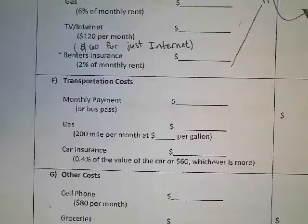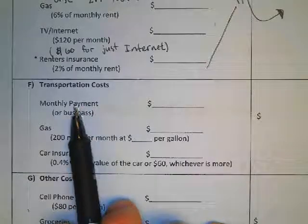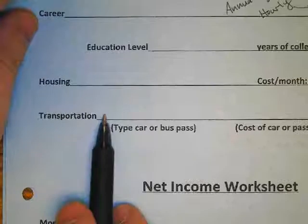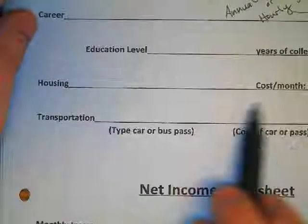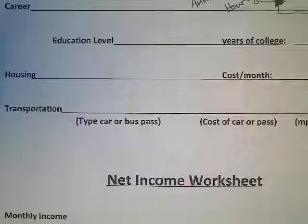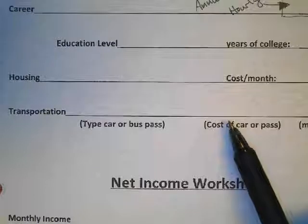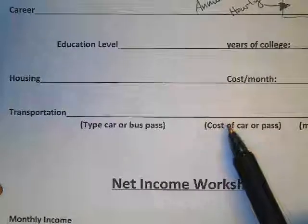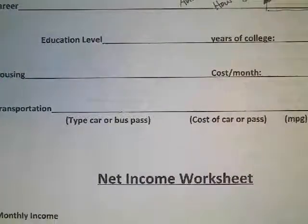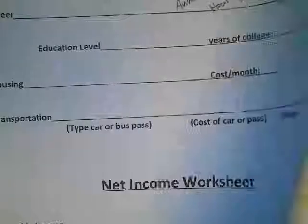Moving on to transportation — your monthly payment is something you have to figure out. You'll have to look at it and do the math using your transportation. You know the cost of your car, and it'll typically say how much the car costs for so many years. You need to figure out how much the car costs for one month. Once you find that monthly cost, you'll put that number right here.